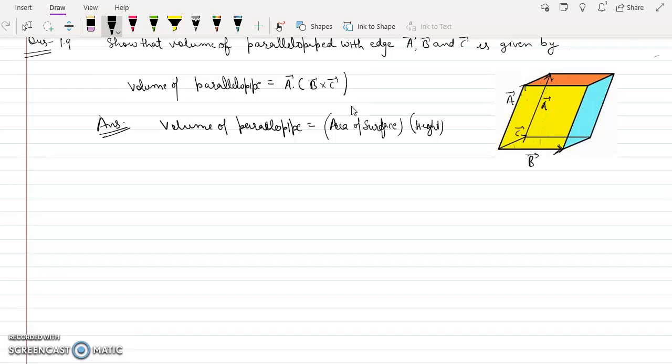Suppose this is our height. Now area of the surface - the floor is made up of two vectors B and C.